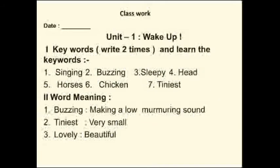The second section is word meanings. Buzzing means making a low murmuring or humming sound. The second word is tiniest — tiniest means very small. Any object or creature that is small, we call it tiniest. Number 3 is lovely — lovely means beautiful. Hope children you understood the word meanings.